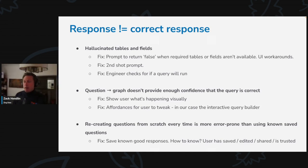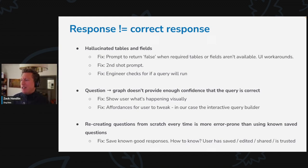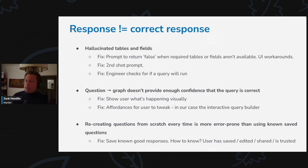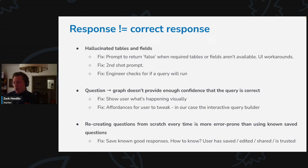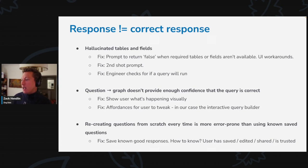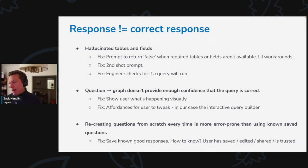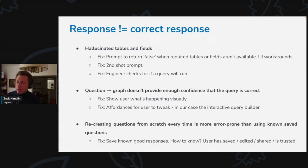Another thing we saw: users would ask a question and we'd show a graph, but that didn't give enough confidence that the query was correct. They could tap and see the SQL, but for folks who weren't technical, they didn't see what was actually happening visually, so it was hard to know if that was correct or not. What we found was a much better way: show this visual interactive query builder that says 'here's what we understand your question to be — does that look right?' When they say yes and run the question, they have a much higher level of confidence that the query being run is actually what they want.